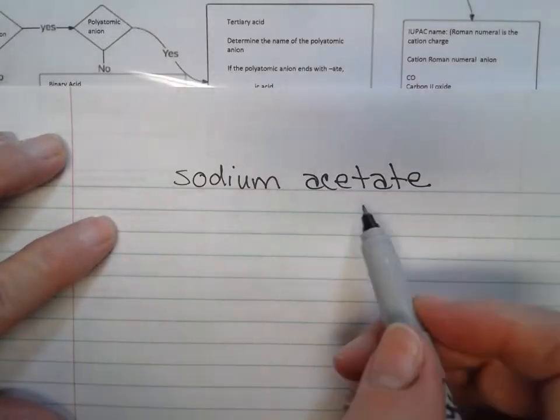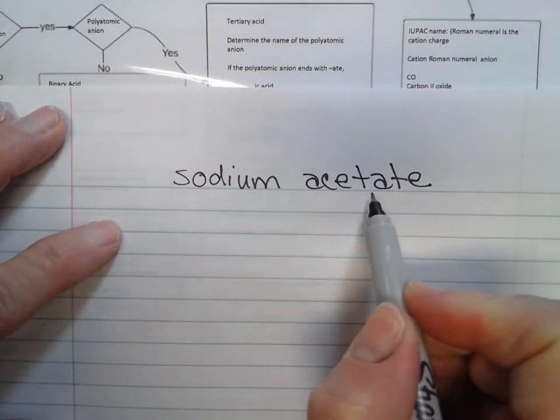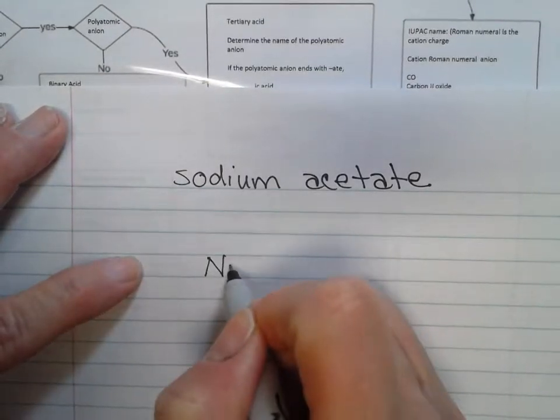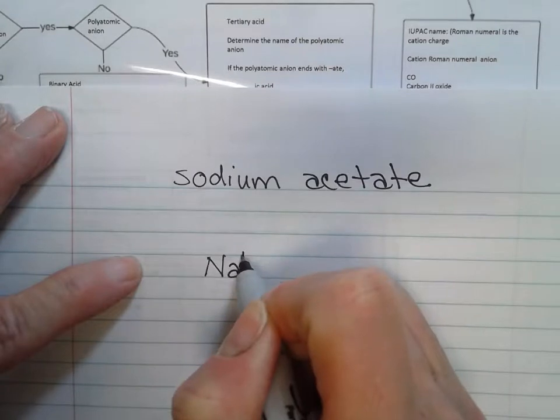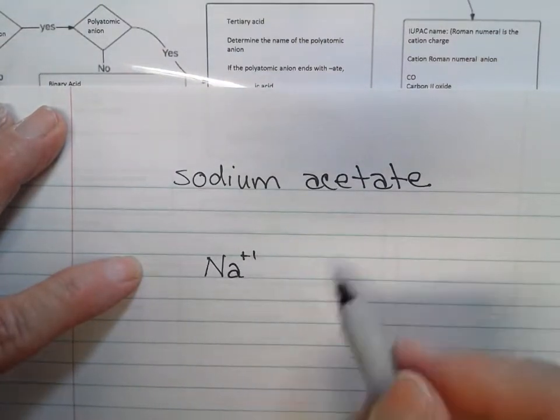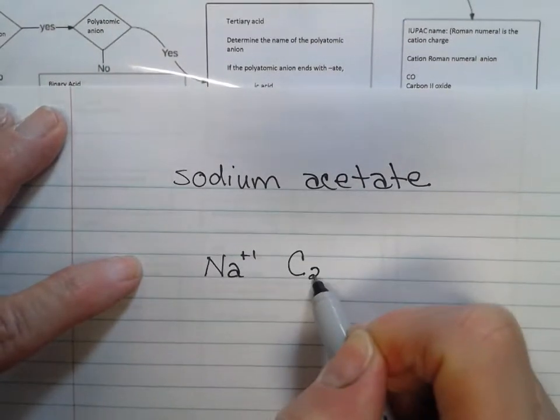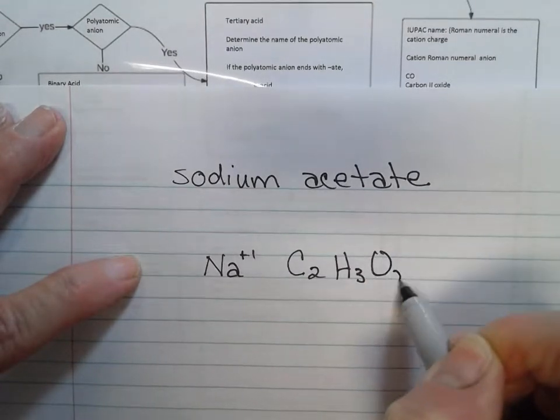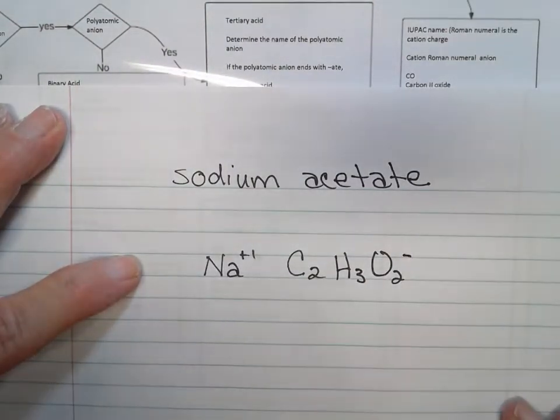We're going to write the formula for this compound, sodium acetate. Sodium is Na, it has a plus one charge. Acetate is C2H3O2 with a negative one charge.